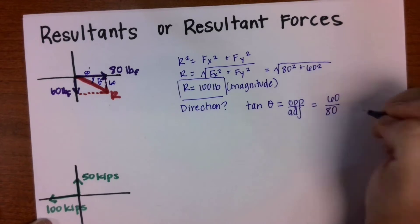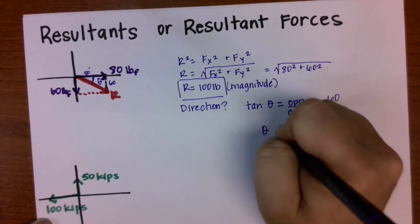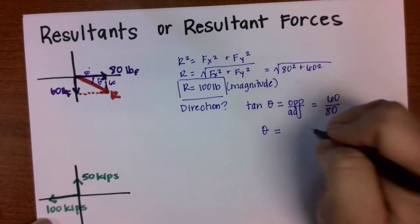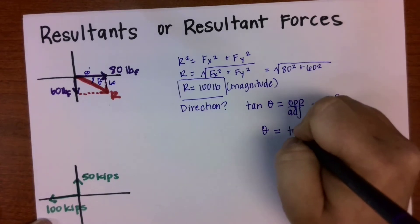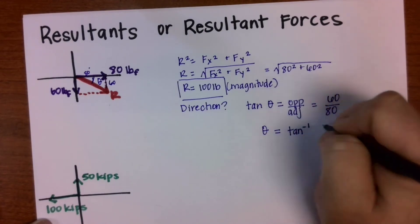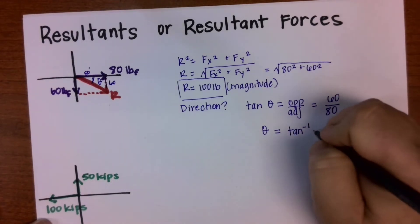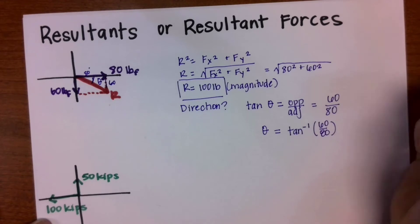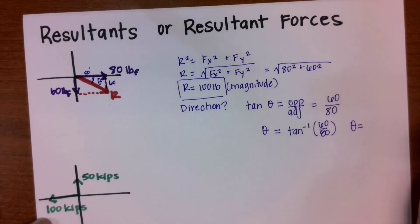When I go to my calculator, that means theta is going to be equal to the inverse tangent of 60 divided by 80, or the arc tangent of 60 divided by 80. When you plug all that into your calculator, what we're going to get is that theta has a value of 36.9 degrees.